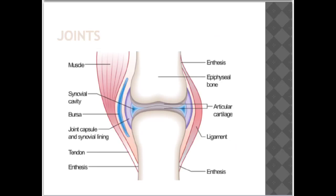Many joints are held together and supported by bands of connective tissue called ligaments, which attach bone to bone across the joint. Skeletal muscle also surrounds joints and is attached to the bone by a connective tissue called tendons. These different types of connective tissue, combined with the structure of the joint, provide stability and control the range of movement. You can see an example of a ligament joining bone to bone, and the tendon attaching muscle to bone.